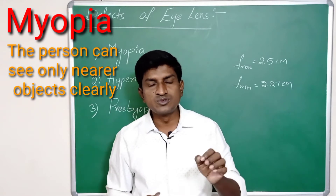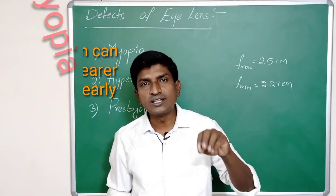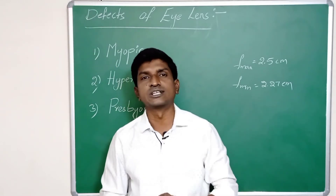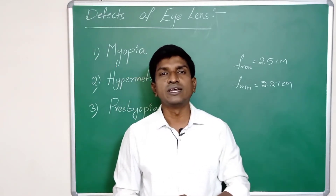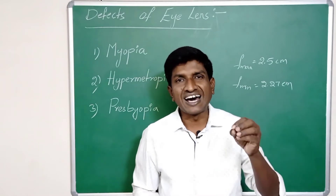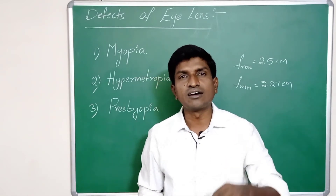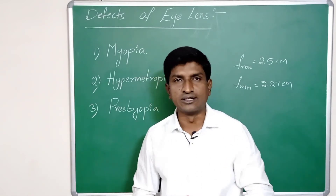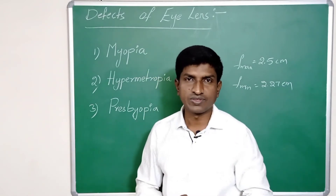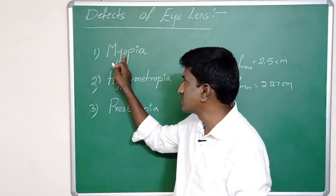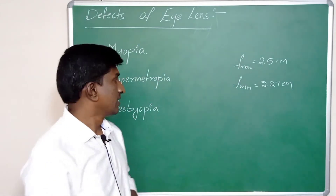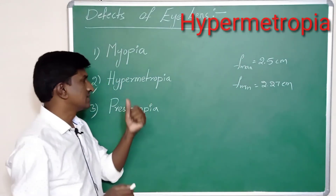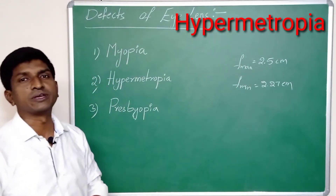If a person with myopia observes distant objects, those objects appear unclear or blurred. This is the key symptom of myopia.